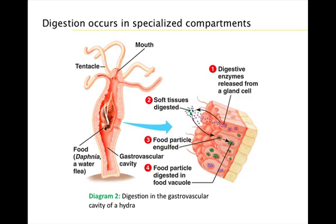Diagram 2 illustrates an example of the digestion that occurs within a gastrovascular cavity. First, gland cells lining the gastrovascular cavity secrete digestive enzymes that break down the soft tissues of the prey. Third, the food particles are then engulfed by other cells, or lastly, broken down in food vacuoles.